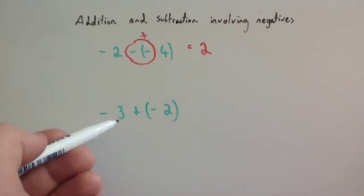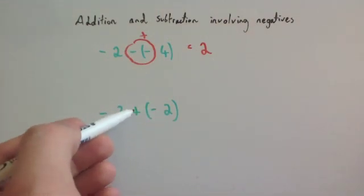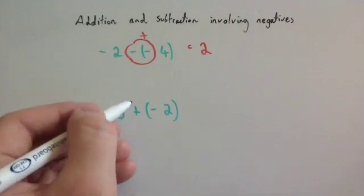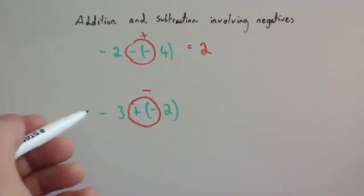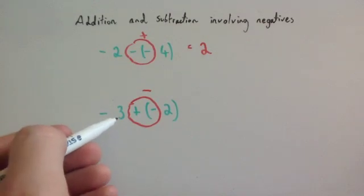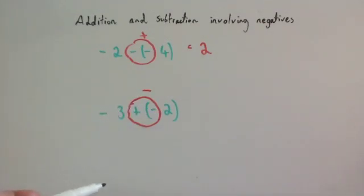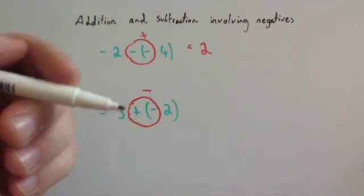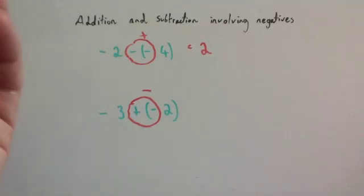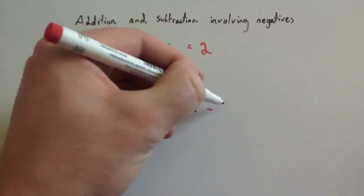Here we've got minus 3 plus minus 2. Again, you've got two signs directly beside each other, so you replace them. Because they're different to each other, you do a subtract, giving minus 3 subtract 2. That means you're going to go 2 to the left from minus 3 — so remember, when subtracting from a negative it goes to the left: minus 4, minus 5. So the answer is minus 5.